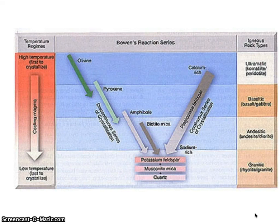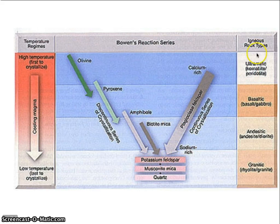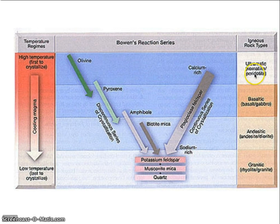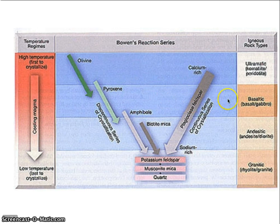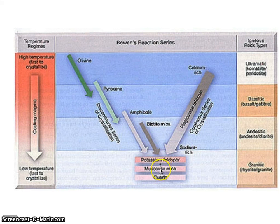Here's Bowen's reaction series. On the left-hand side you have temperature, from highest to lowest. Then you have your different minerals and their rate of crystallization, and on the right your type of igneous rock. The one that crystallizes first would be olivine, with small amounts of feldspar — this would be an ultramafic rock, very dark and very dense. Going down further, you end up with basaltic rocks, which have more pyroxene and a lot of feldspar. As it cools further, you have biotite and more feldspar — that's andesitic. Then the ones that cool slowest are muscovite micas and quartz, which give you the granite type of rock.